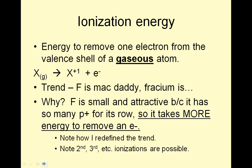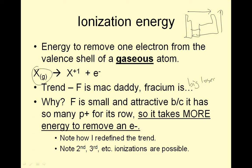Ionization energy is the energy to remove one electron from the valence shell of a gaseous atom: X → X⁺¹ + e⁻. Fluorine is the mac daddy — the best. Francium is a big loser. Fluorine is small and attractive because it has so many protons for its row and fewer shells, so it takes more energy to remove an electron. Notice how I redefined the trend.